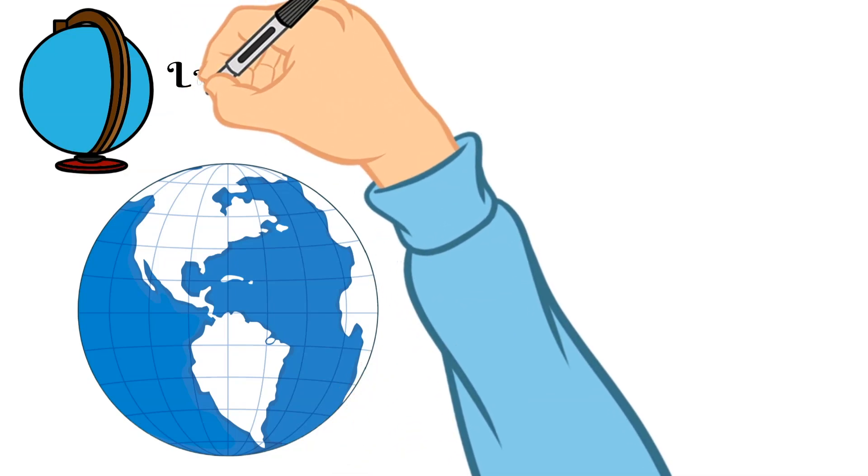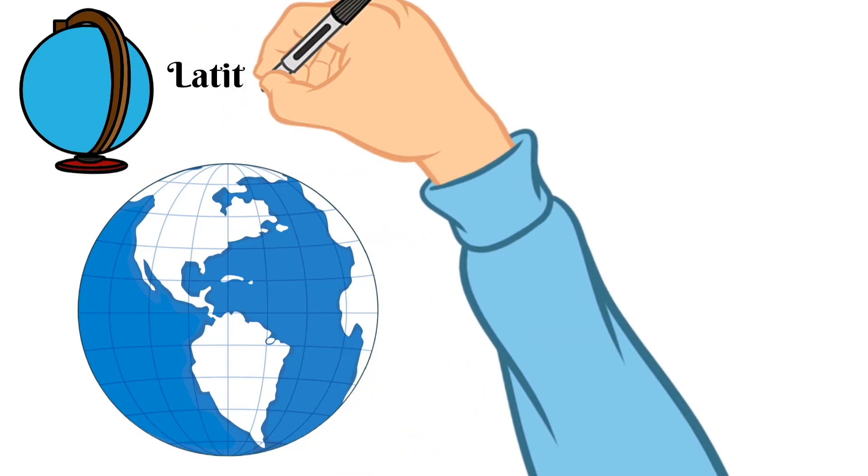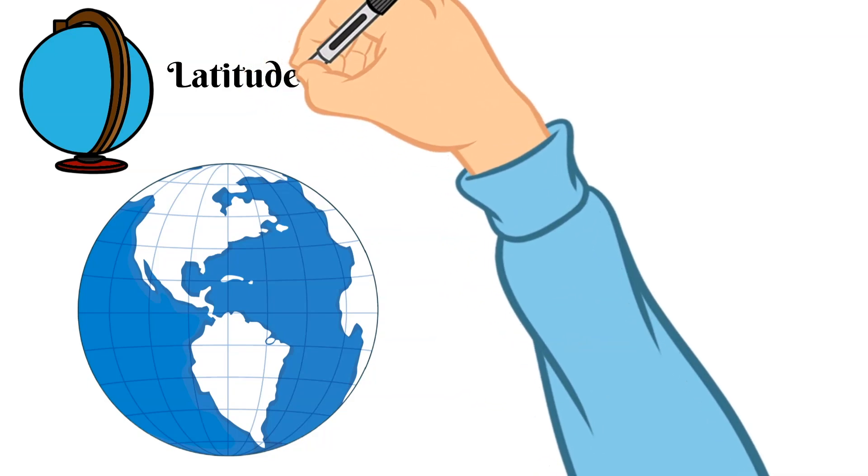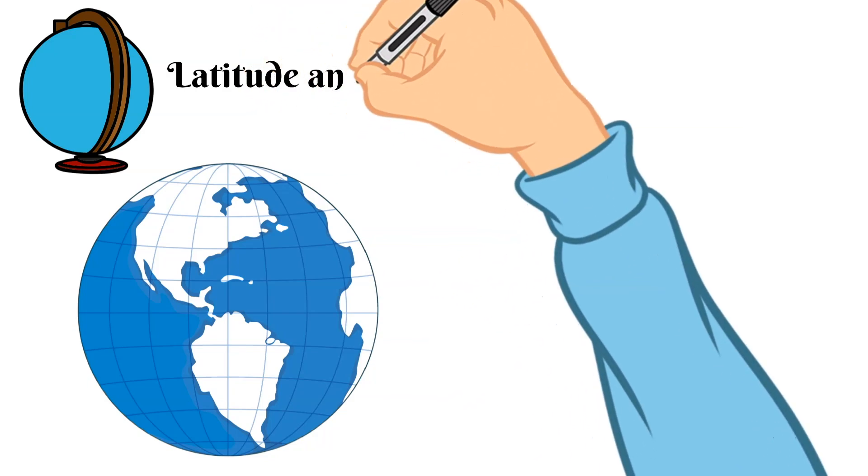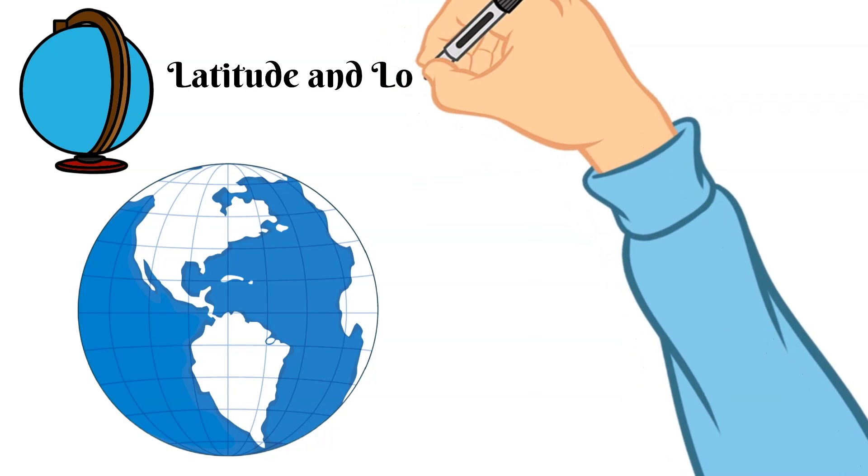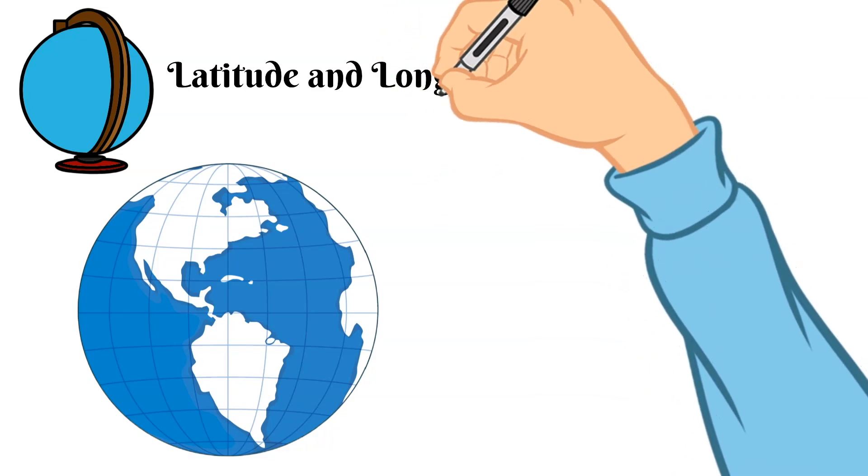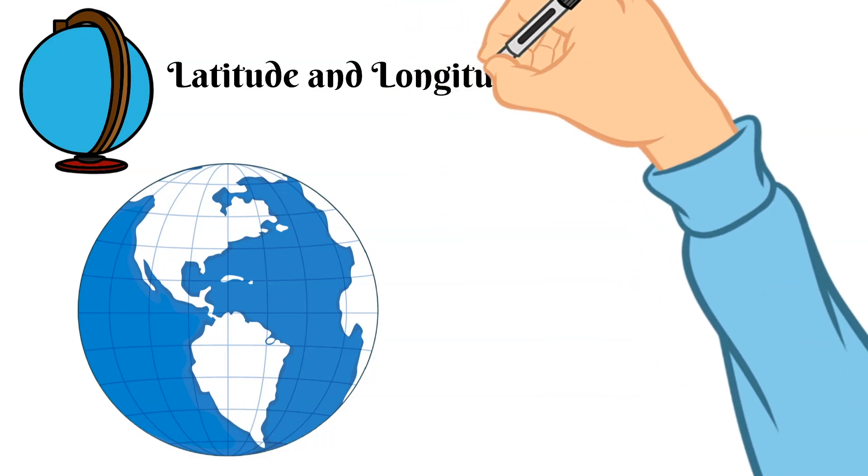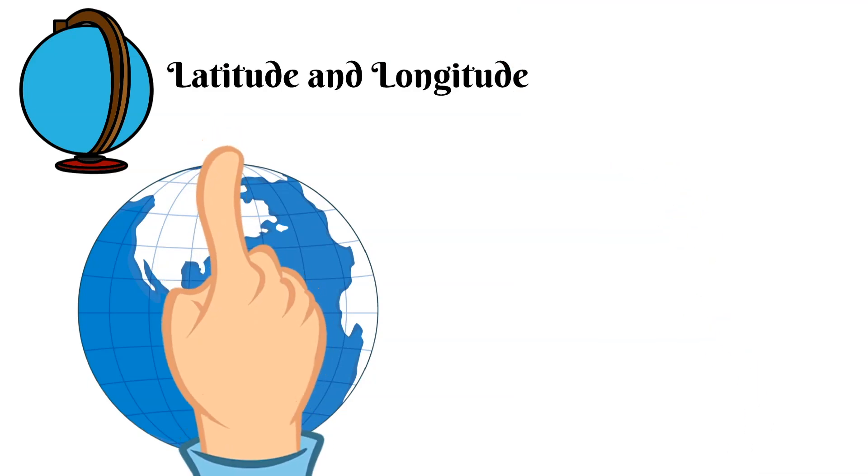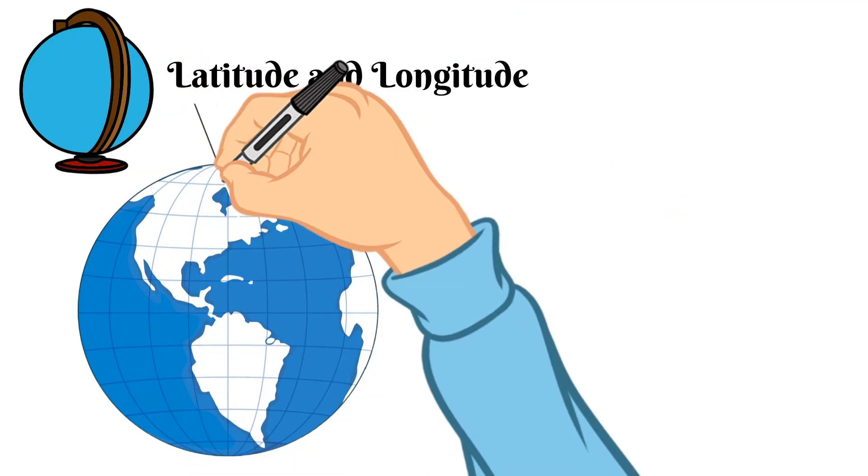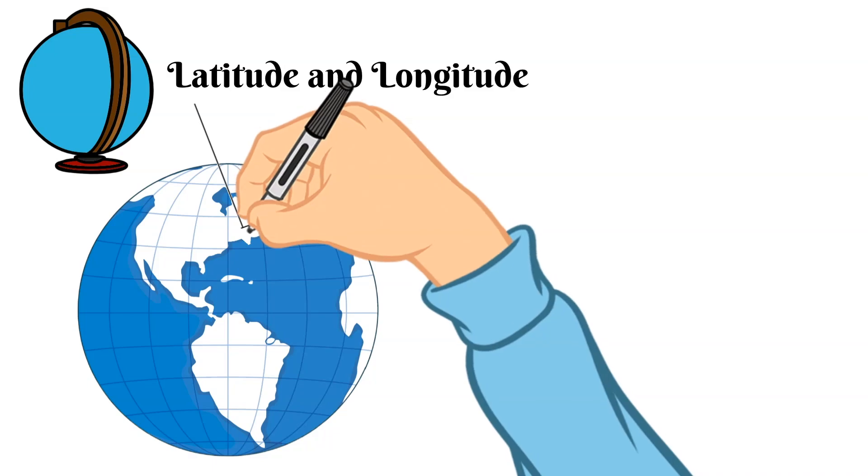Now any place on earth can be located using a system called latitude and longitude and these are sets of imaginary lines that circle the earth and latitude and longitude lines are some of the things that can be seen on a map and a globe.